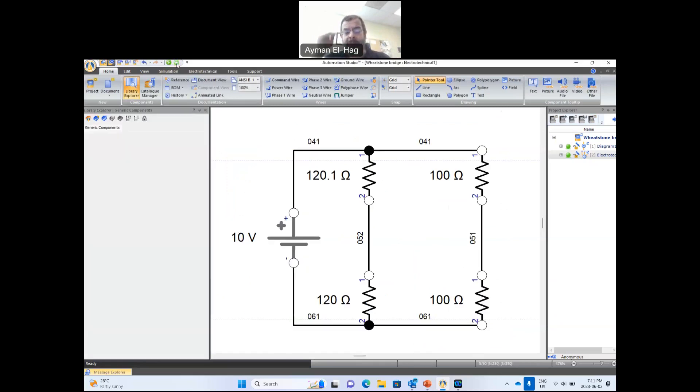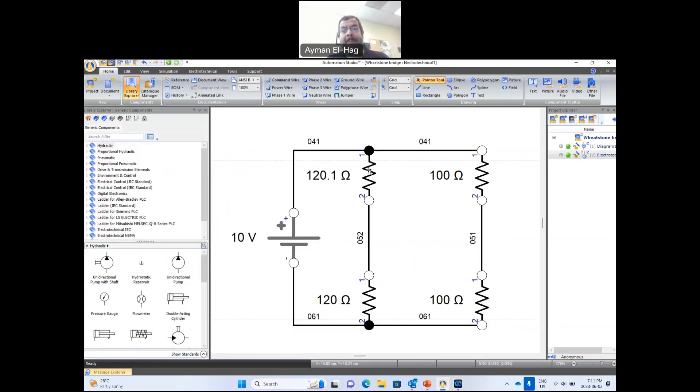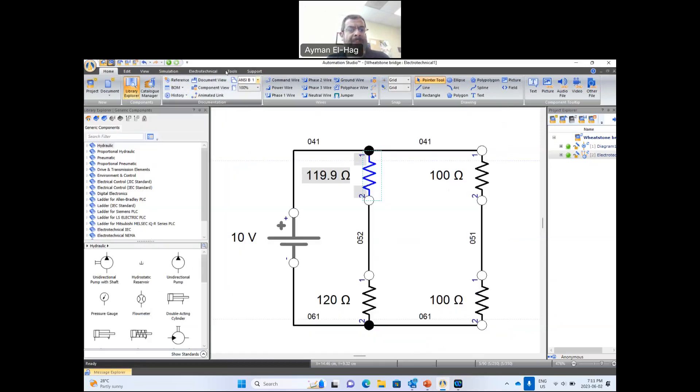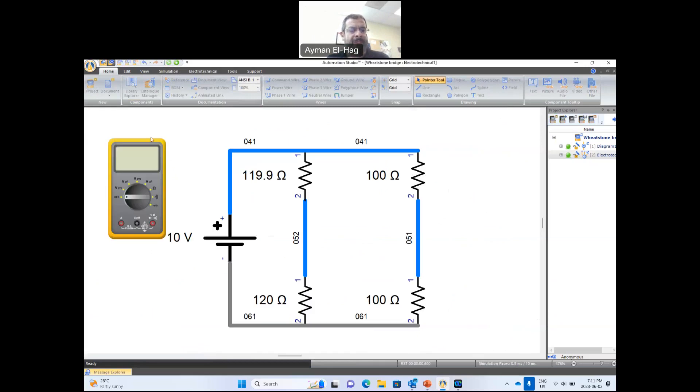Now, what will happen if I reduce the resistance by exactly the same value? So instead 120.1, it is 119.9. So I reduce the resistance by 0.1. Let me run the simulation here. Let me do the measurement. And the voltage here will be equal to plus two millivolt.